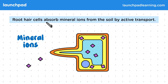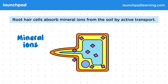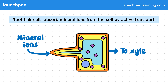Root hair cells absorb mineral ions from the soil by active transport. Because mineral ions have to move up a concentration gradient to get into the root hair cell, this requires energy. Once the mineral ions have been actively transported into the root hair cell, they are then transported further from the roots to the rest of the plant via the xylem.